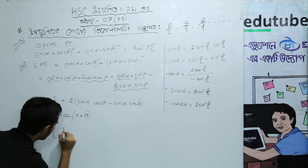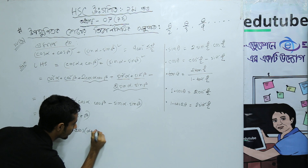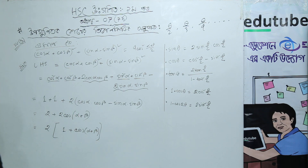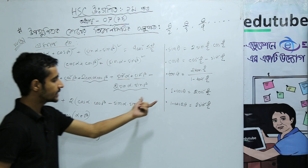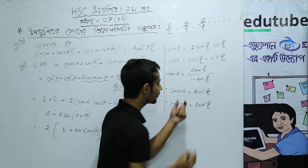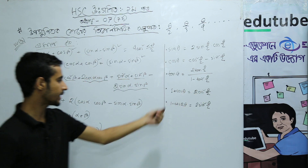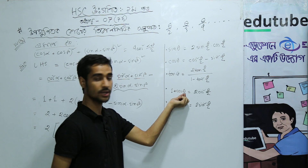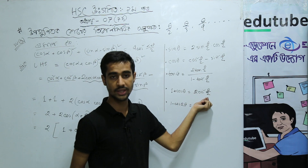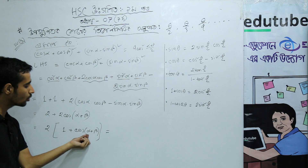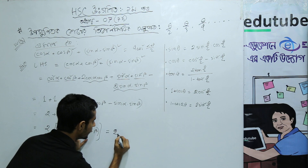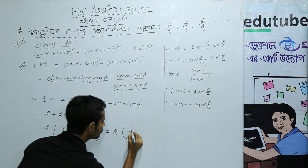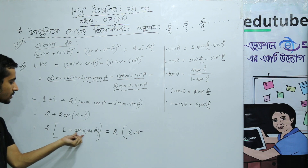So we come on the daily power: 1 plus cos(alpha plus beta). Now we apply the formula: 1 plus cos theta equals 2 cos squared (theta by 2). So 1 plus cos(alpha plus beta) equals 2 cos squared of alpha plus beta by 2.